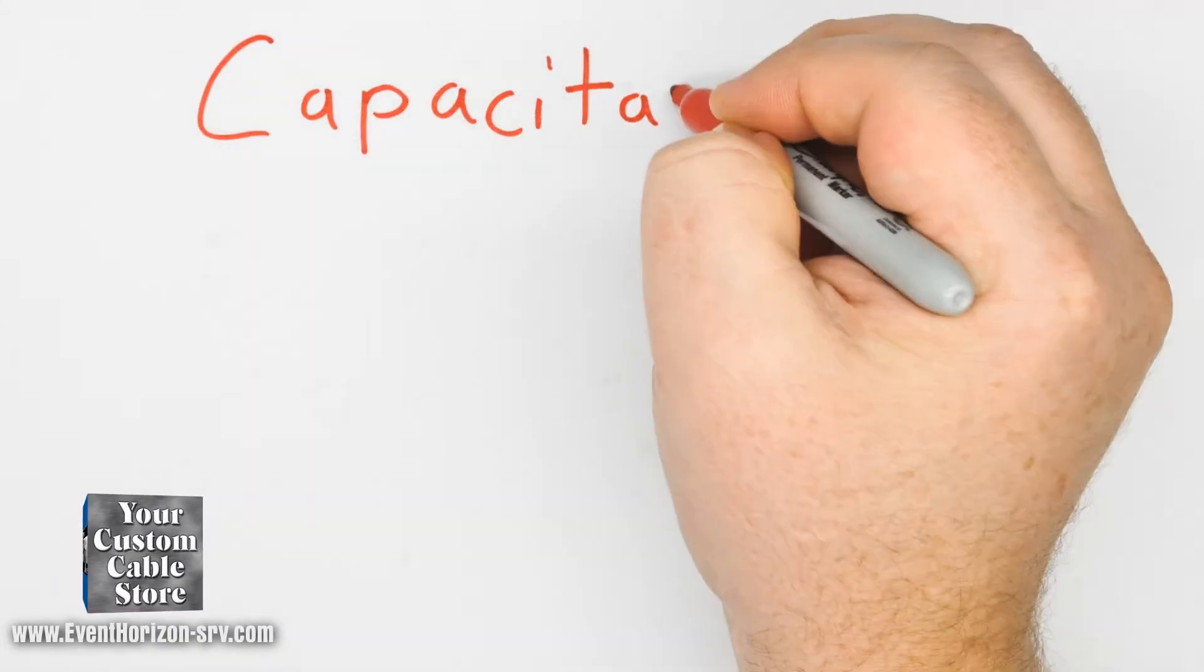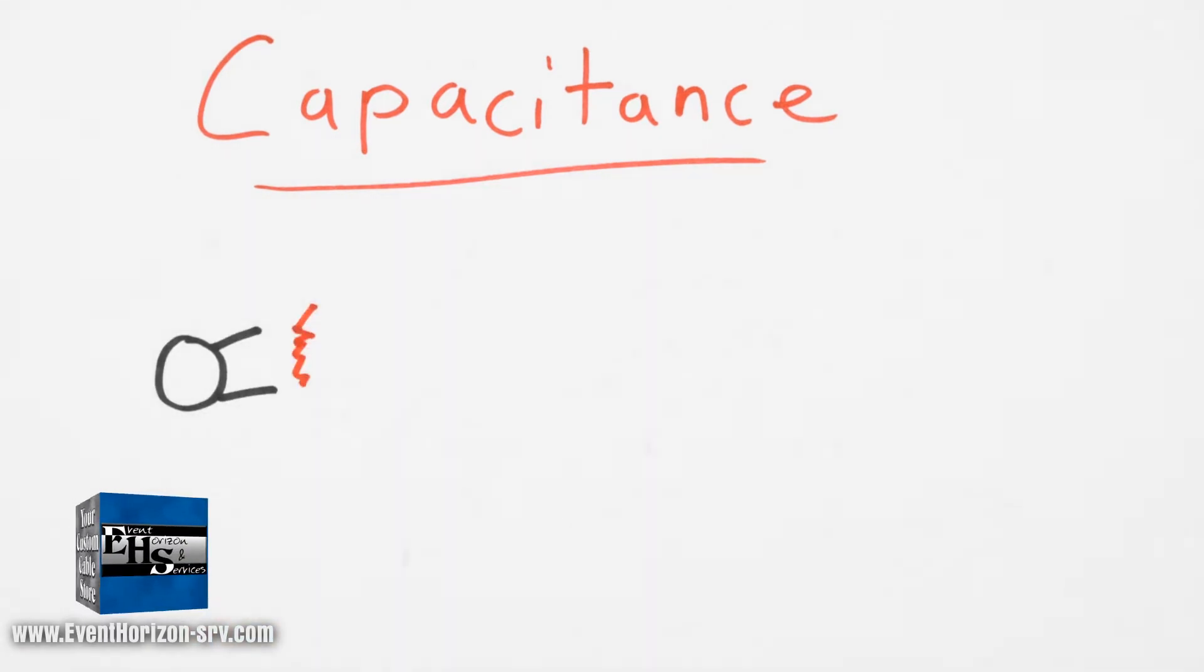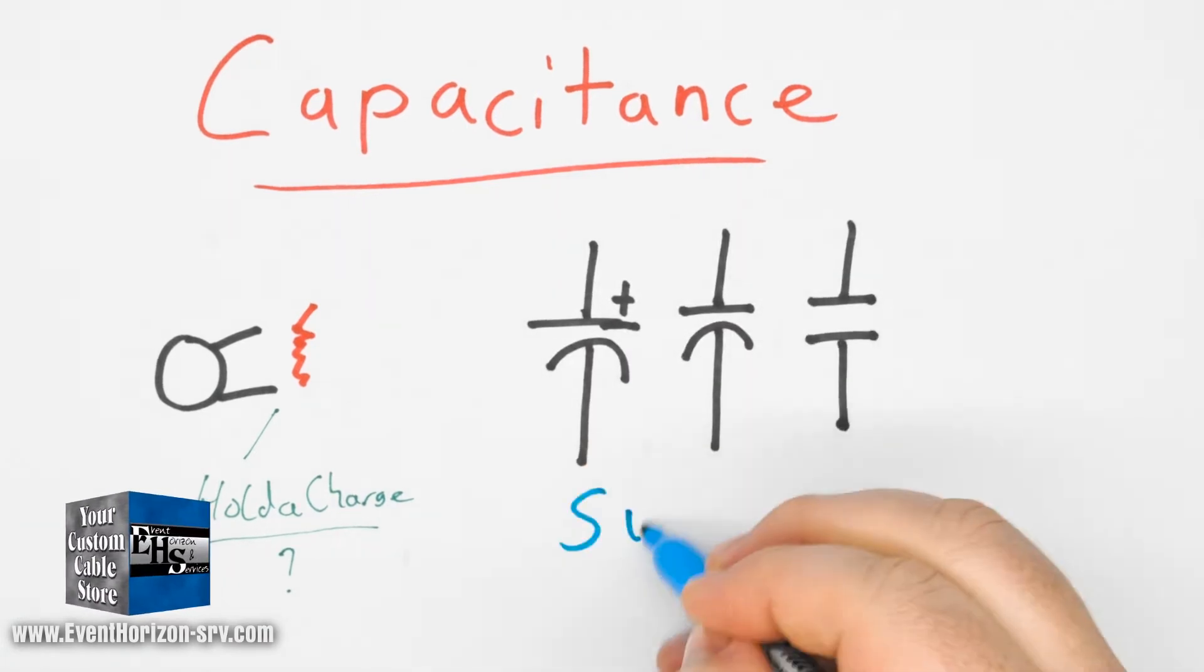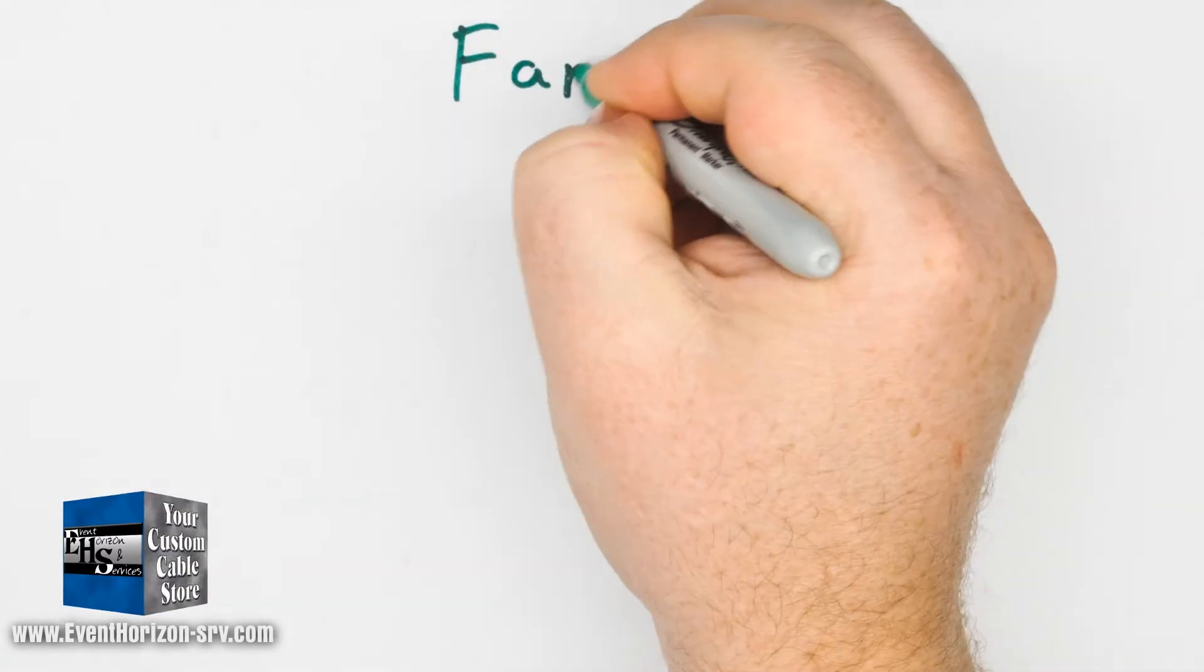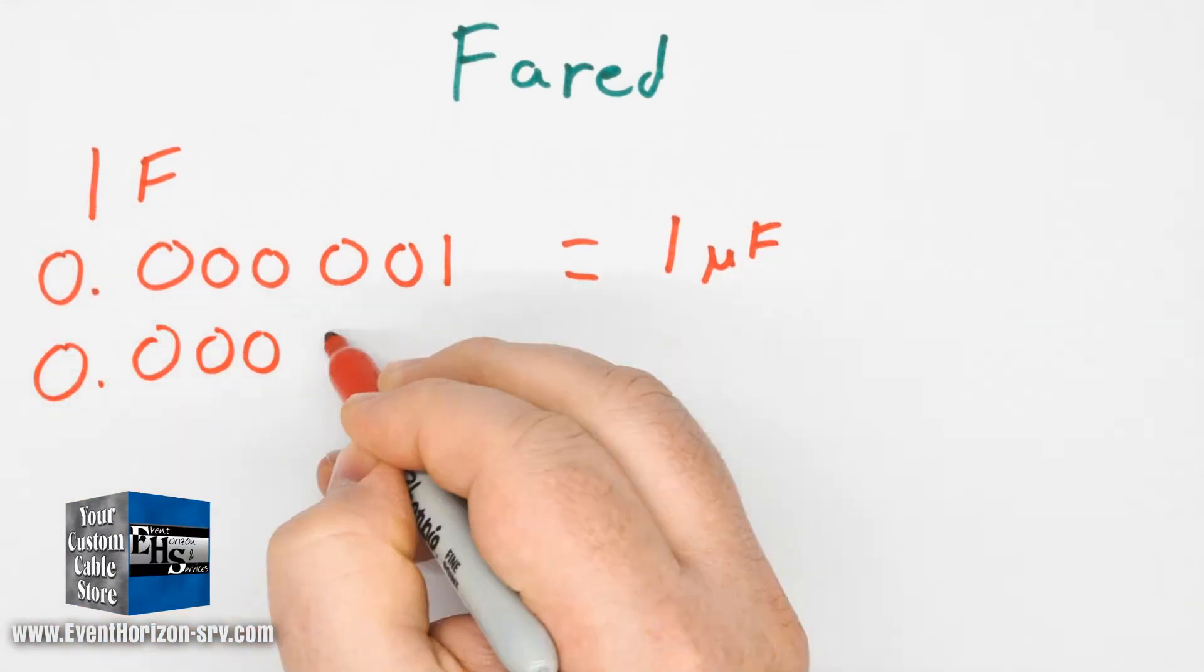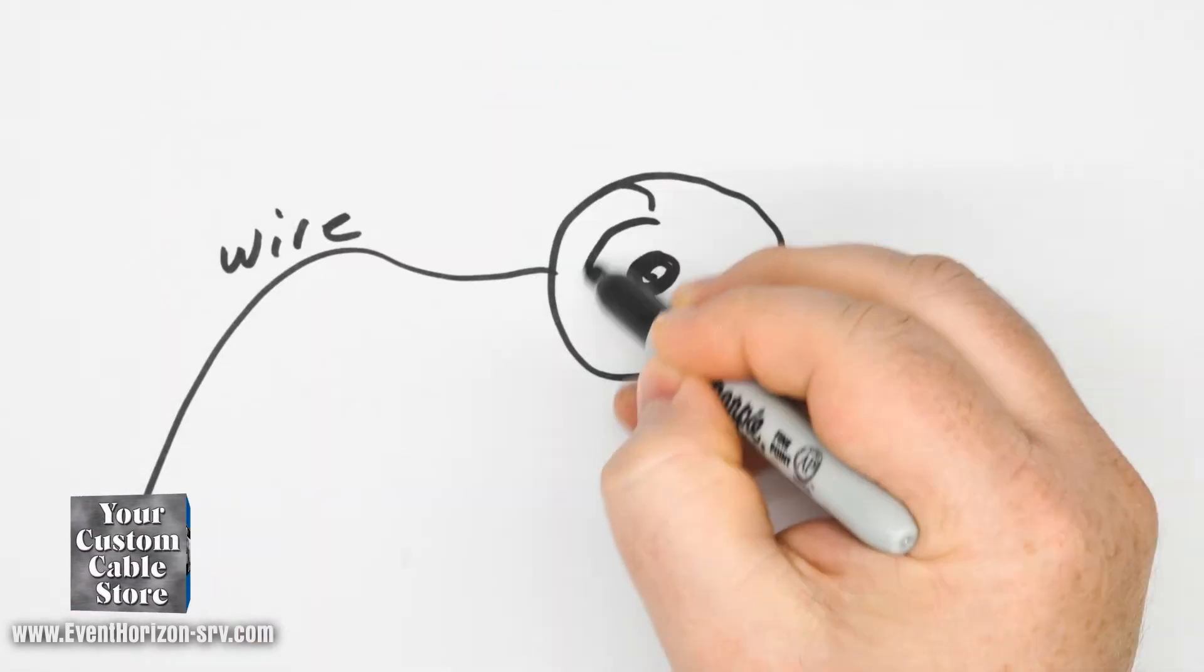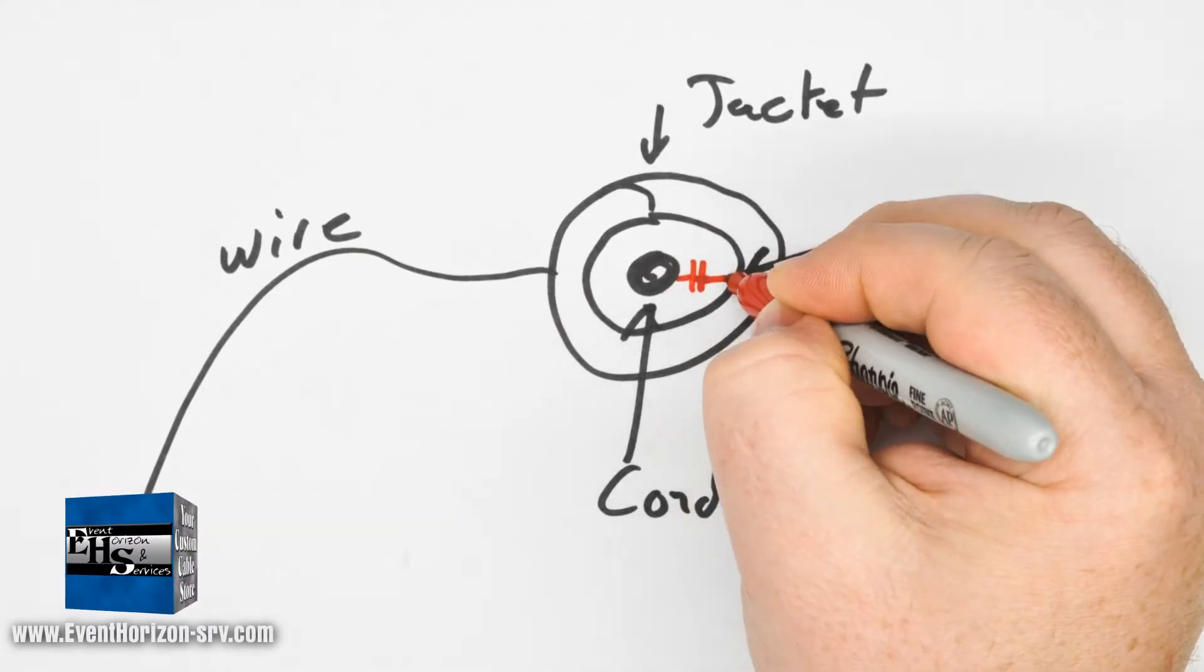One last definition to get out of the way is capacitance. Capacitance is the ability of a device to store an electric charge. This is most often seen with electronic parts called capacitors that store electricity that can be released when needed. The unit of measure is the farad, but most often you'll find microfarad and picofarad references because one farad measurement is quite large. Capacitance comes into play because wire has capacitance between the conductors, and that can affect the audio you're running through it.